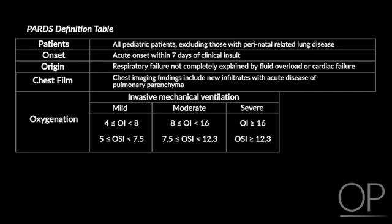An OI of greater than or equal to 4 satisfies the criteria for PARDS. If you do not have access to an arterial blood gas to obtain a PaO2 value, you can also calculate the oxygen saturation index, or OSI, by substituting SpO2 for PaO2, provided that measured SpO2 is less than or equal to 97%. An OSI value of greater than or equal to 5 satisfies the criteria for PARDS. The table shows the varying degrees of PARDS severity based on both OI and OSI.